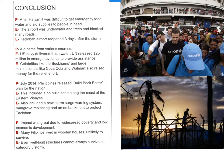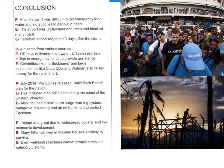In 2014, the Philippines released a Build Back Better plan. This included a no-build zone along the coast of the eastern Visayas, because most of the damage was done on the coast where the typhoon struck first. It also included a new storm surge warning system, mangrove replanting — soft engineering strategies — and an embankment to protect Tacloban, which was the most populated city. The impact was also worsened by widespread poverty and low economic development, making it harder to clear up and develop for the future.